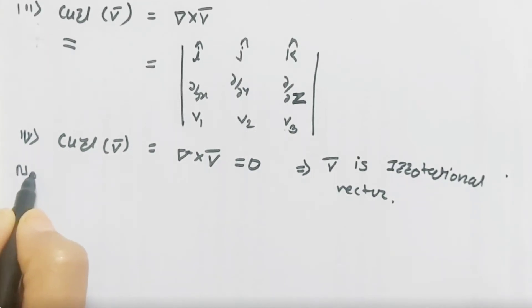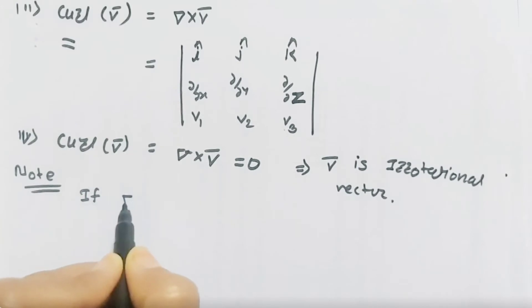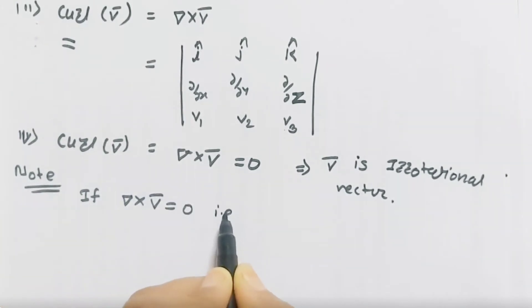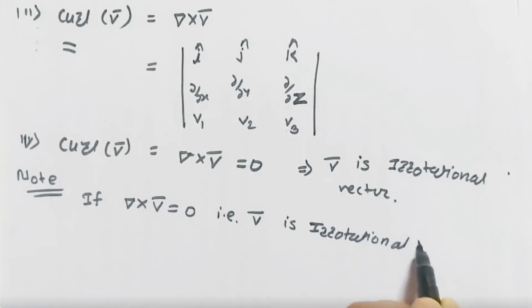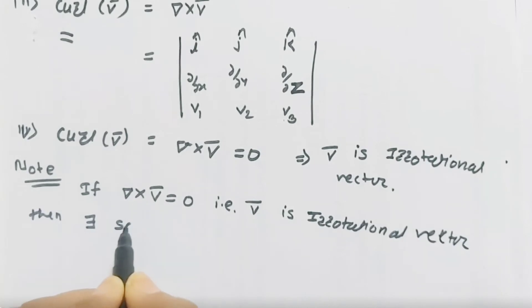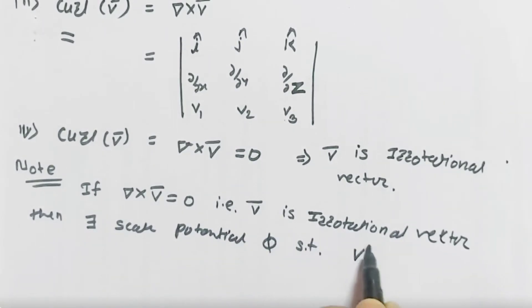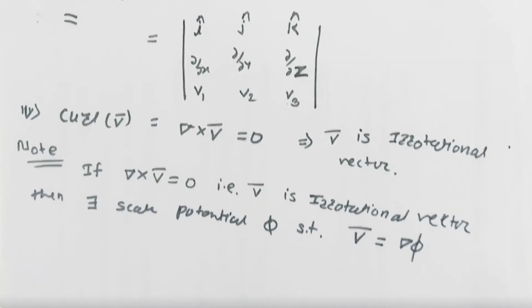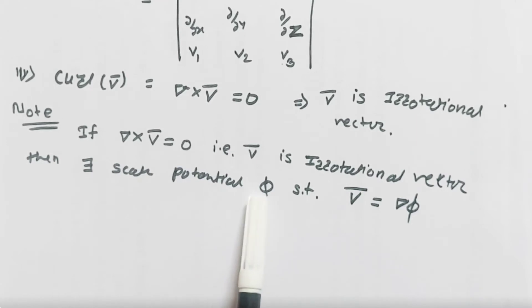If delta cross v-bar equals to zero, that means there is no rotation, so vector v-bar is called an irrotational vector. An important note: if the given vector is irrotational — that is delta cross v-bar equals to zero — then there exists a scalar potential phi such that vector v-bar is equivalent to delta phi, meaning gradient of phi equals the given vector.